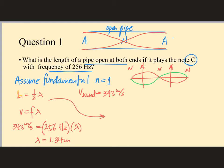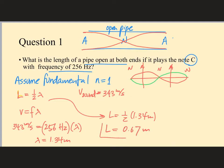The length of the tube needed is one half of 1.34 meters, which gives us 0.67 meters. So that is the length of the tube that plays the note at 256 hertz.